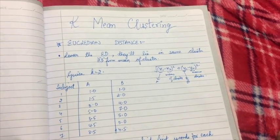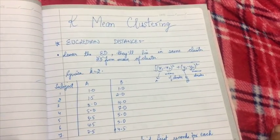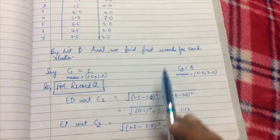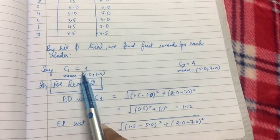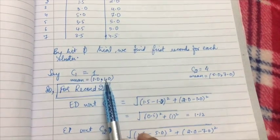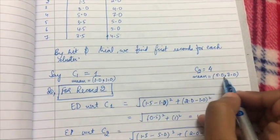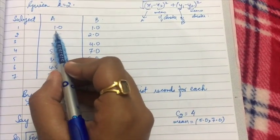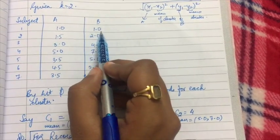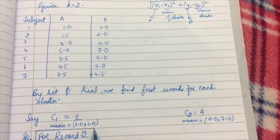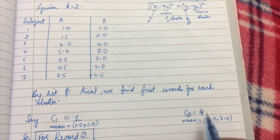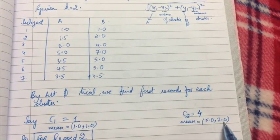I have to group things so that one kind of item is in one cluster and another kind in the other cluster. By initial trial, I put the first item in cluster one and the fourth item in cluster two, and we calculate the mean. For item one, the value of a is 1 and b is 1, so the mean is just those values. For cluster two we have item four, and its corresponding a and b values are written here.